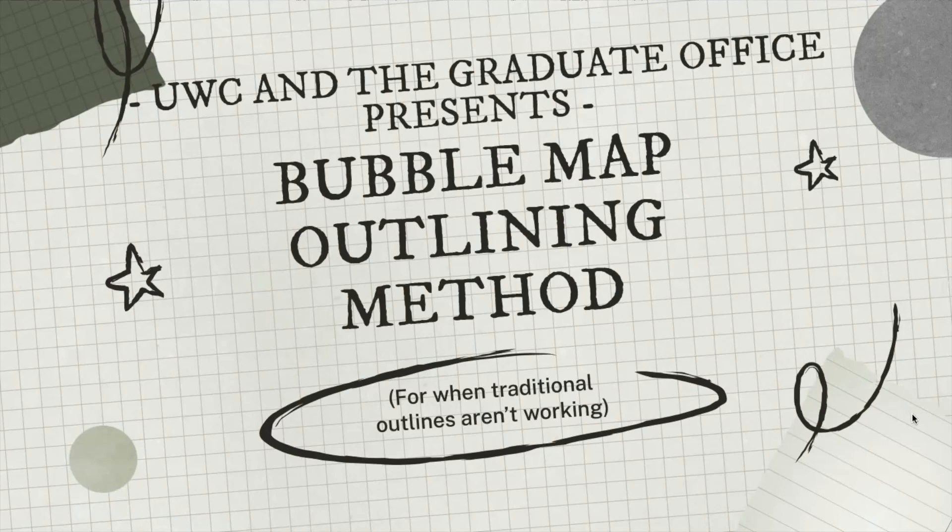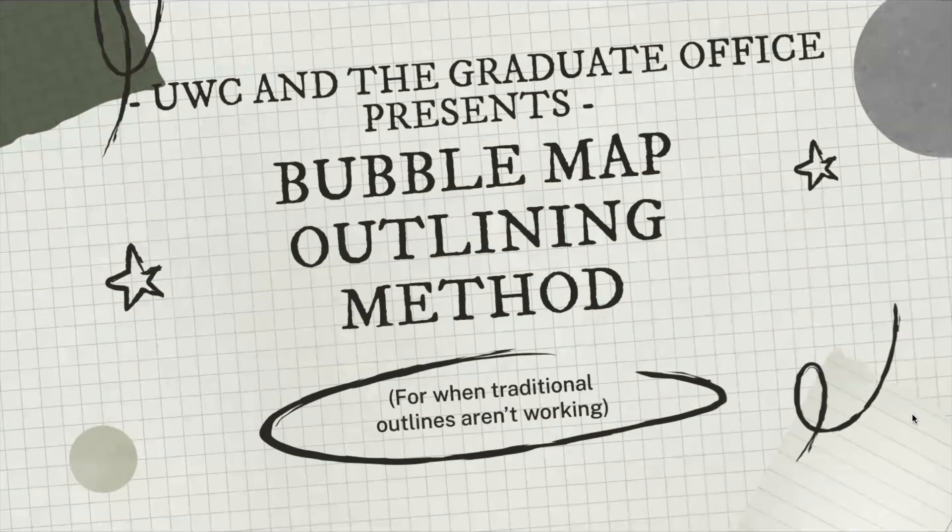Outlining is often an important step to the writing process, but with traditional outlines, it can sometimes be a struggle to organize your ideas in a way that makes sense. How can you tell which ones are the most important and where they should go?